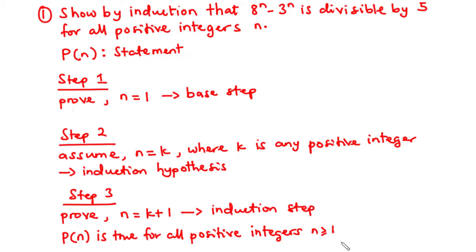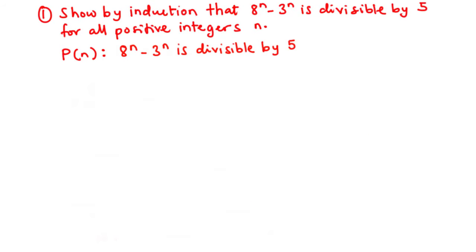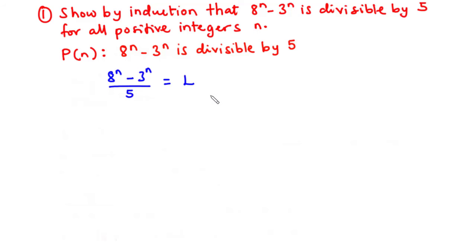Having this in mind, let's try this problem. Given the statement 8^n minus 3^n is divisible by 5, this primarily means that when 8^n minus 3^n is divided by 5, the result equals some integer value l. We can simplify this as 8^n minus 3^n equals 5 times some integer l.